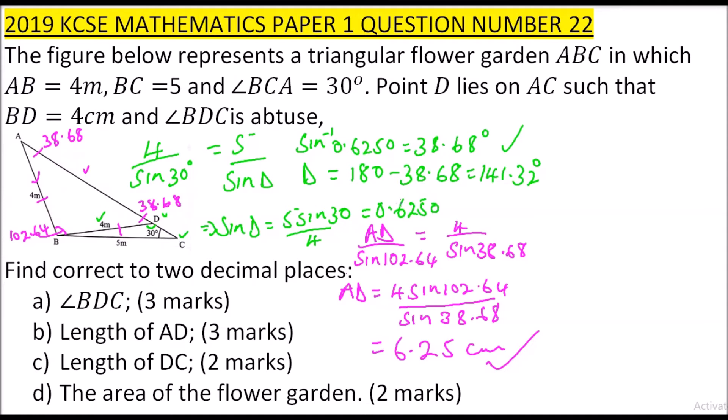Part C is telling us to find the length of DC. We have this angle is 30, and this angle here we have found is 141.32. When you add the two, you get this is 171.32. You subtract from 180 to get this angle here, that is angle B, and when you subtract that you should be able to get 8.68 degrees.